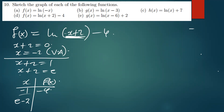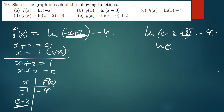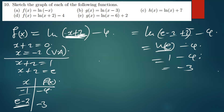Plug in x equals e minus 2: f(e − 2) = ln(e − 2 + 2) − 4 = ln(e) − 4 = 1 − 4 = negative 3. So the second point is (e − 2, negative 3), approximately (0.7, negative 3).